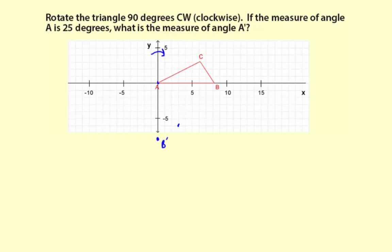And if you want to double check your rotations, what you can do is just make sure that you have a 90 degree angle. This is point C prime here.